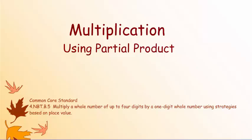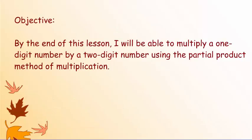Today we're going to look at multiplication using partial product. This is a Common Core standard that states: multiply a whole number of up to four digits by a one-digit whole number using strategies based on place value. Today's objective is: by the end of this lesson, I will be able to multiply a one-digit number by a two-digit number using the partial product method of multiplication.